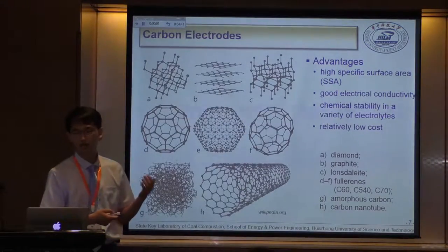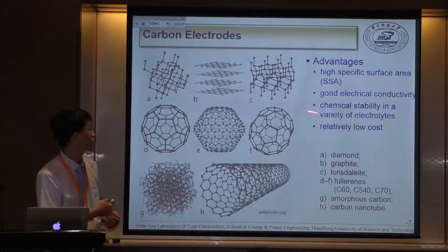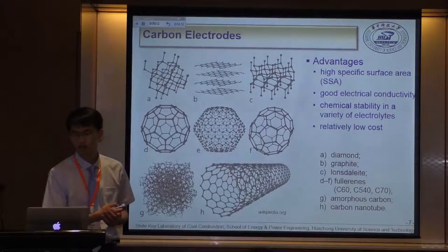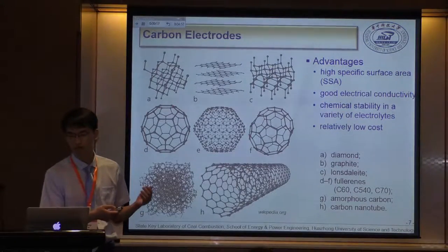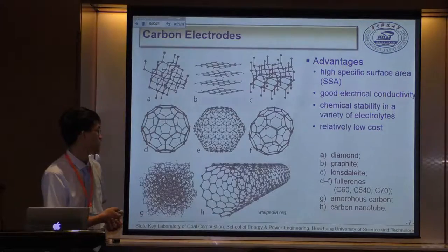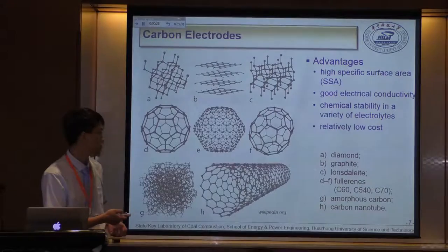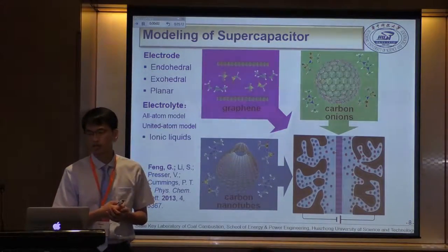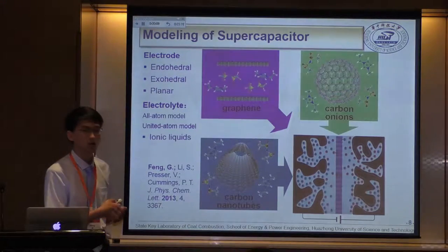With respect to the electrode, carbon has become the most widely used electrode material due to its high specific surface area, good electrical conductivity, chemical stability, and relatively low cost. Today, diverse forms of carbon have been developed for use in supercapacitors, such as graphite, amorphous carbon, porous carbon, and carbon nanotubes. In our research, we use molecular modeling to investigate the interface between ionic liquids and the carbon electrode.